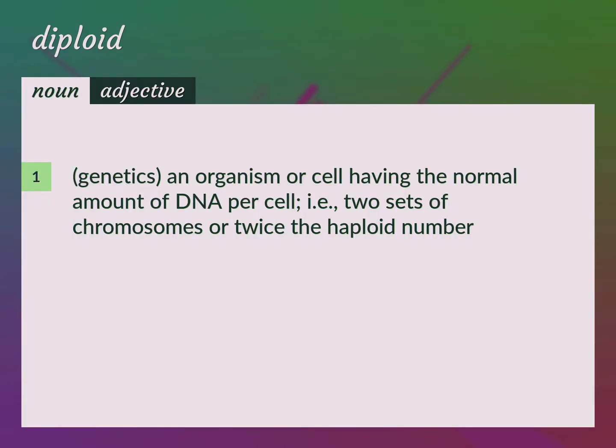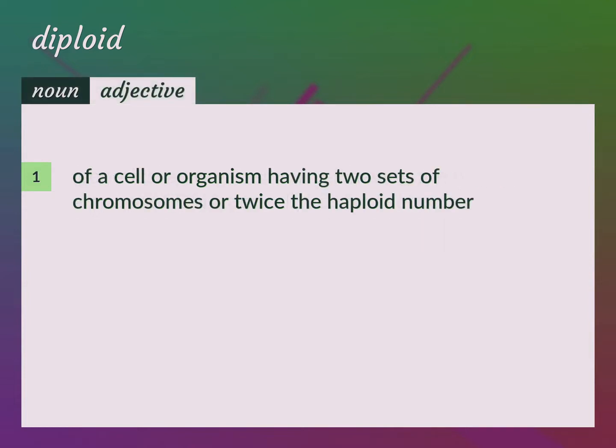Genetics. Diploid: an organism or cell having the normal amount of DNA per cell, i.e., two sets of chromosomes or twice the haploid number. Of a cell or organism having two sets of chromosomes or twice the haploid number. Diploid somatic cells.